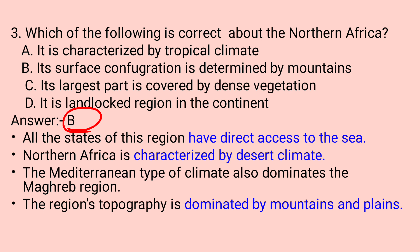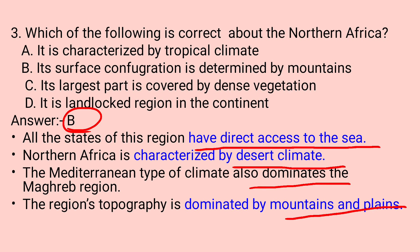All states of this region have direct access to the sea. Northern Africa is characterized by desert climate, and the Mediterranean type of climate also dominates the Maghreb region. The region's topography is dominated by mountains and plains. So the answer is B.